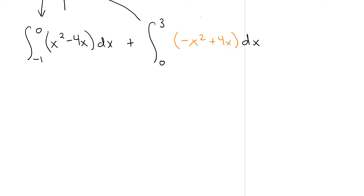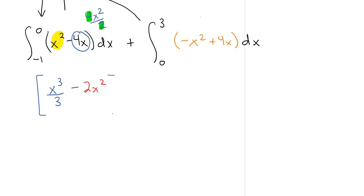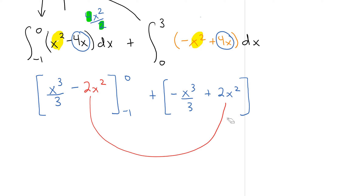You're applying antiderivative principles and then using the fundamental theorem of calculus. The antiderivative of x squared is x cubed divided by 3, and the antiderivative of 4x is 2x squared. So the first bracket is (x³/3 − 2x²) from −1 to 0. For the second part, the antiderivative of negative x squared is −x³/3 and the antiderivative of 4x is +2x squared, in square brackets from 0 to 3.